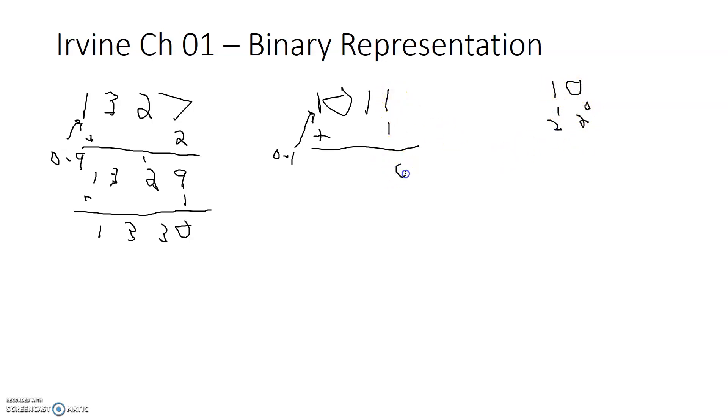So 1 and 1 is 0, carry the 1. 1 and 1 is 0, carry the 1. 1 and 0 is 1. So it's just something to be mindful. When we are doing addition in binary, if you think back to the way you did addition in base 10, it's the same. It's just that we're dealing with a smaller possible set of values, which is 0 and 1.